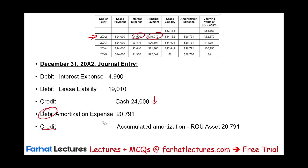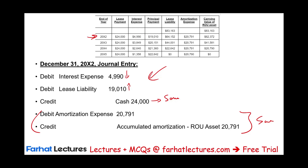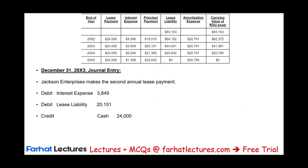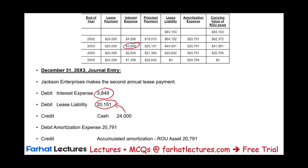For subsequent years, the amortization entry stays the same, but the interest component changes. In year X3, the interest expense is lower at $3,849 because the lease liability was reduced from $83,000 to $64,152. More of the $24,000 payment goes toward the principal, and the amortization remains the same at $20,791.